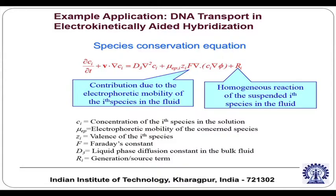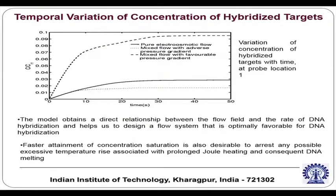In addition, because there are capturing probes on the surface, there is a reactive term in the species transport equation. The concentration of DNA as a function of time shows that with combined pressure-driven and electroosmotic flow you can have a very rapid increase in concentration, meaning very successful hybridization.